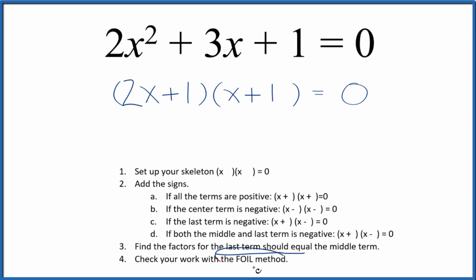And now we can use the FOIL method to make sure we did this correctly. We multiply the first terms, the outside term, the inside terms, and then the last terms.